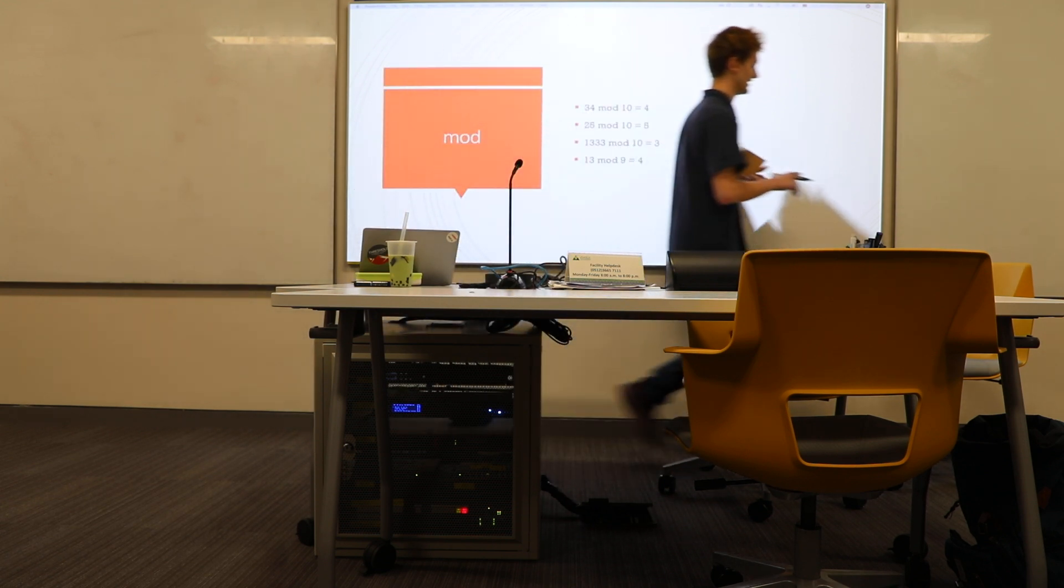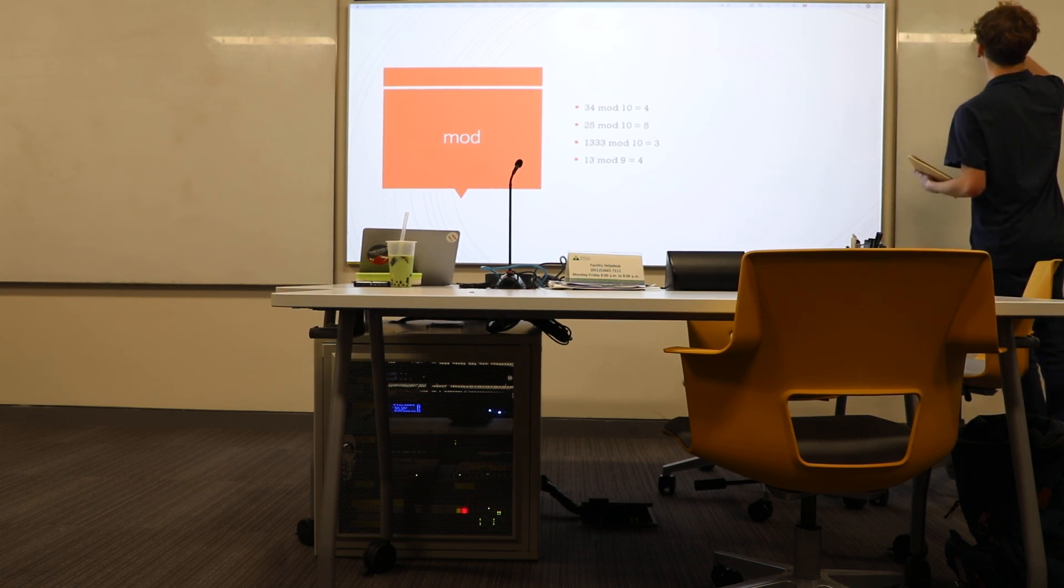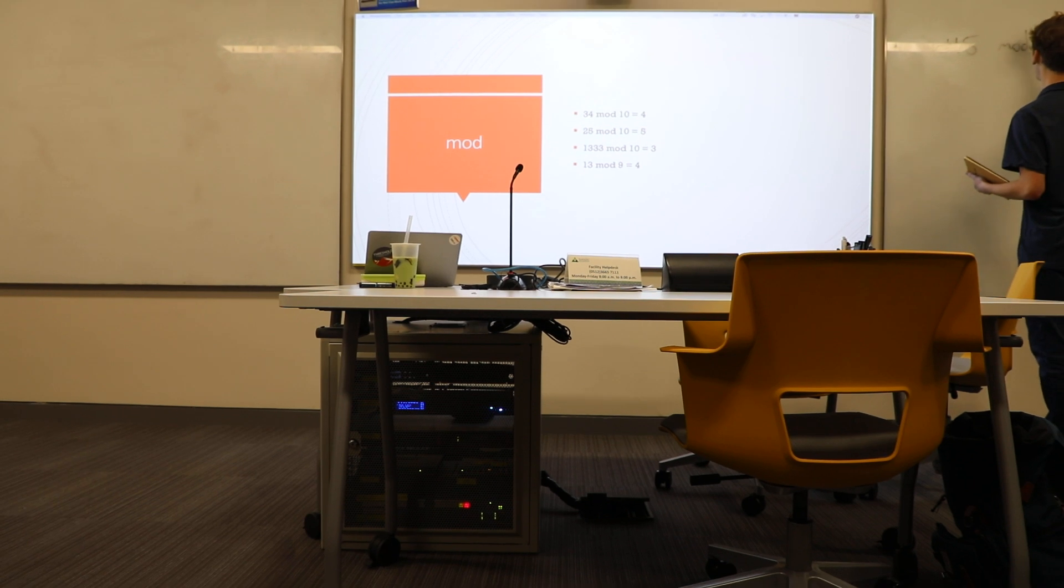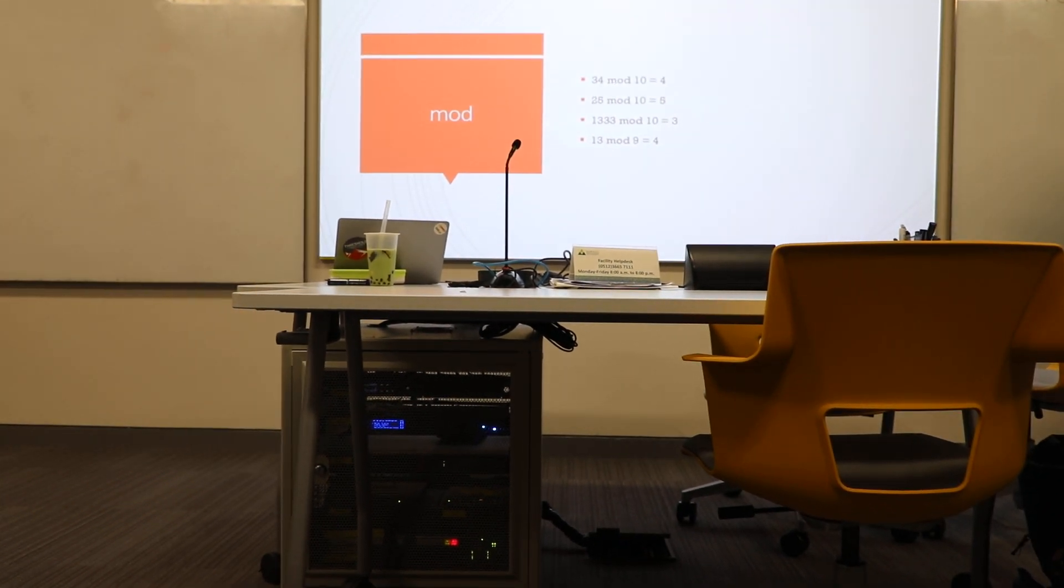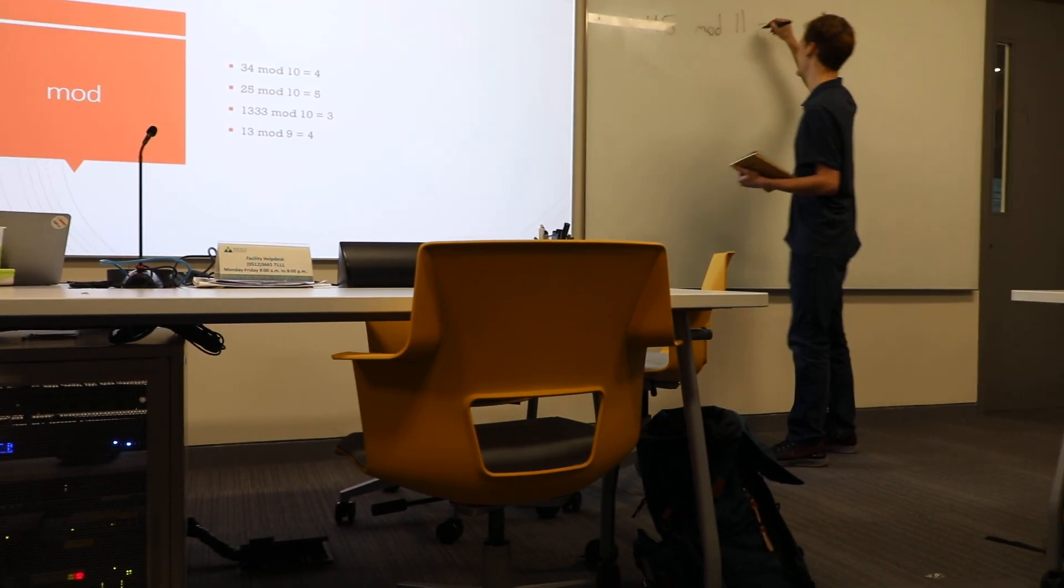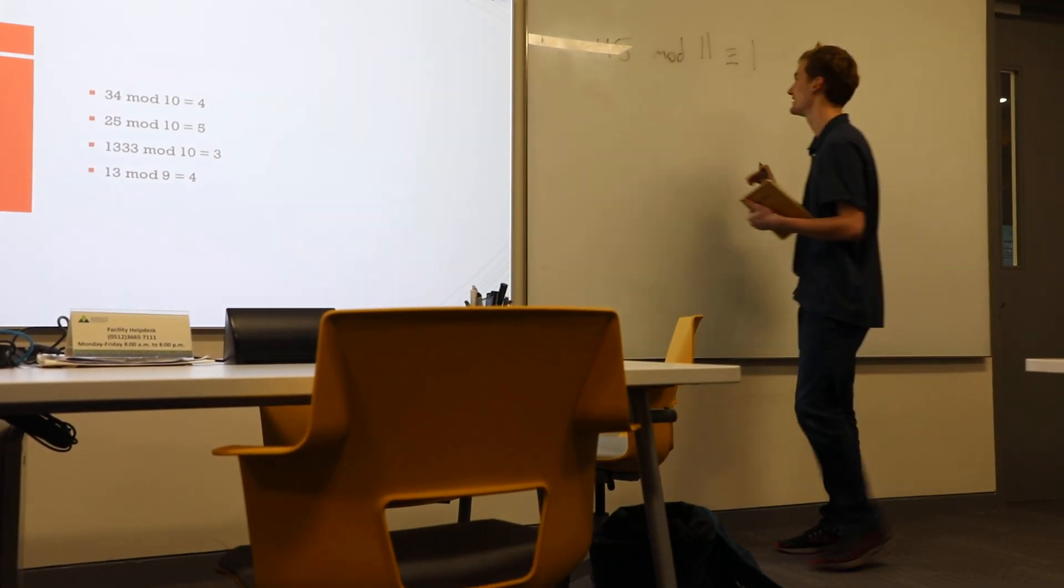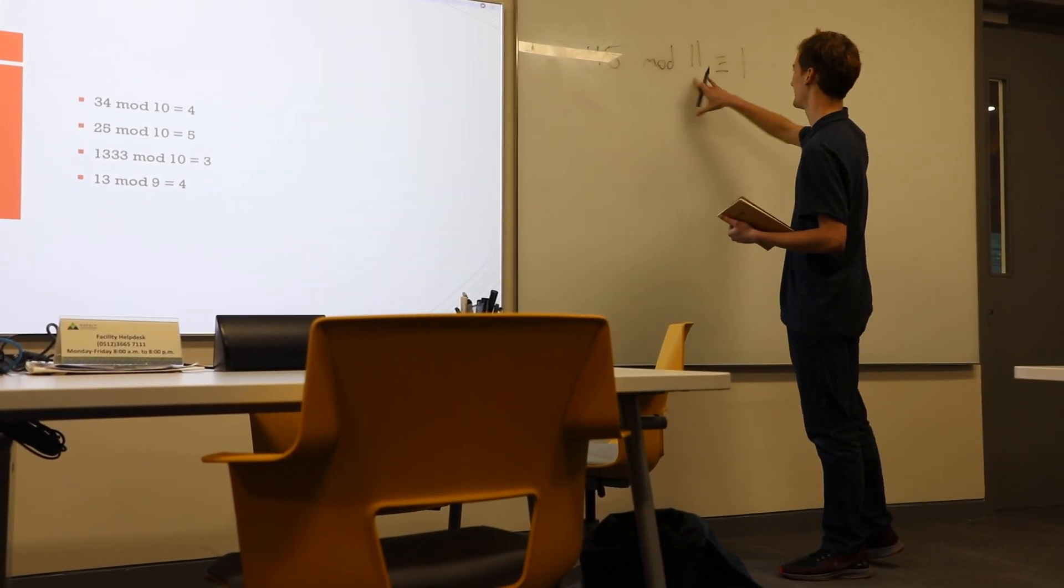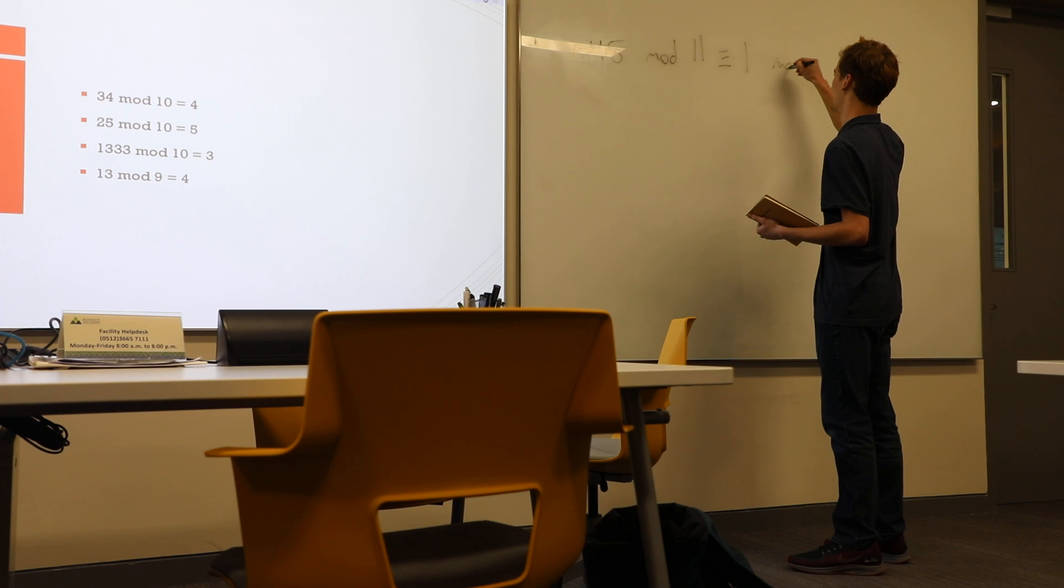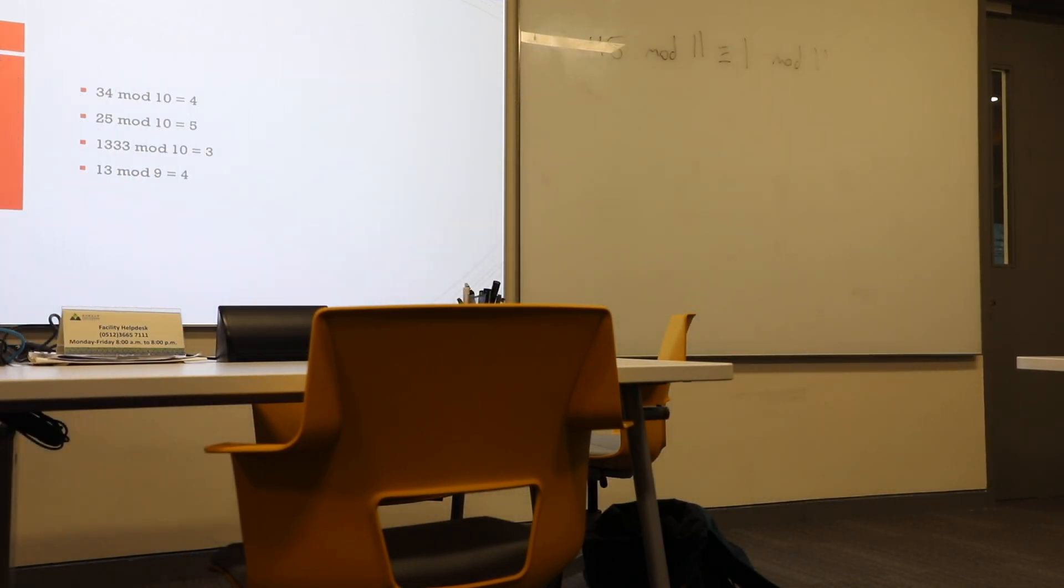So you can do basically any sort of number like that. So we'll just give it a try. What is 45 mod 11? Does anyone know? Yeah, exactly. So you draw this thing, it's like 3 lines, it's called the congruency. So 45 mod 11 is congruent to 1 mod 11. So that stuff is not too hard, but it's going to be really important later on.